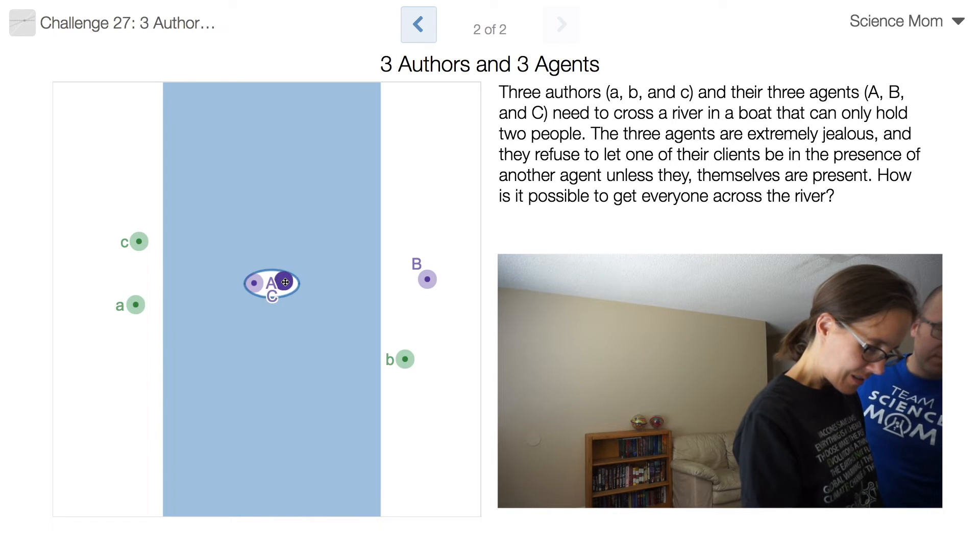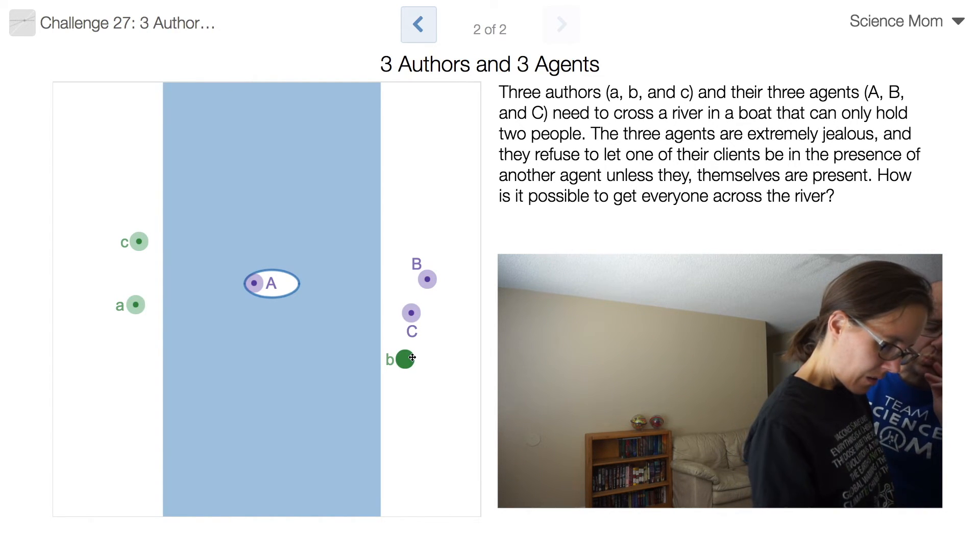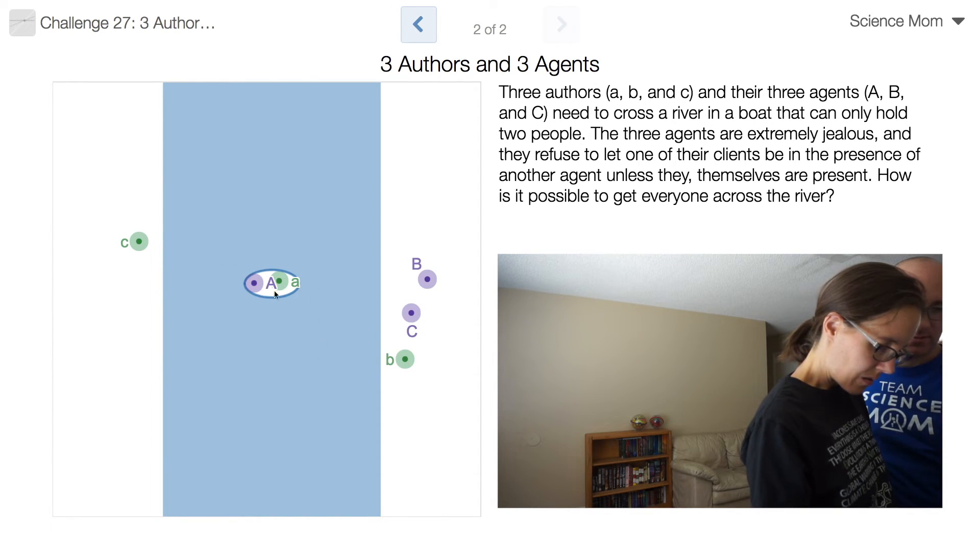These two cross. Okay. And then when I get over here... Just one... We can do this? Well, yeah. Agent B is there for author B, so we're okay. Okay. And then... No, but agent A can't come back. Because then agent A would be with author C.